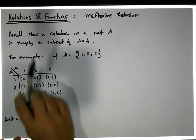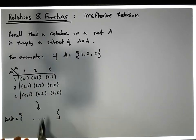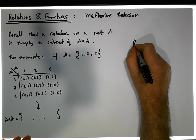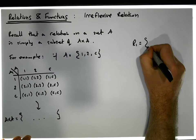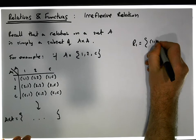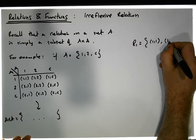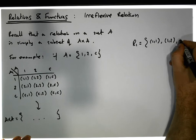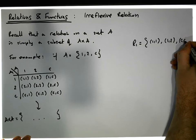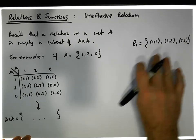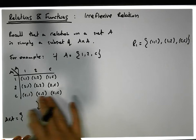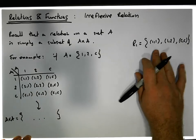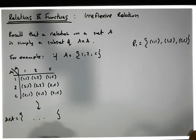We can choose any set of ordered pairs from the cross product. For example, let's call R1 = {(1,1), (1,2), (C,C)}. By definition, this is a subset of the cross product and therefore this is a relation. But we're interested in relations that have particular properties.